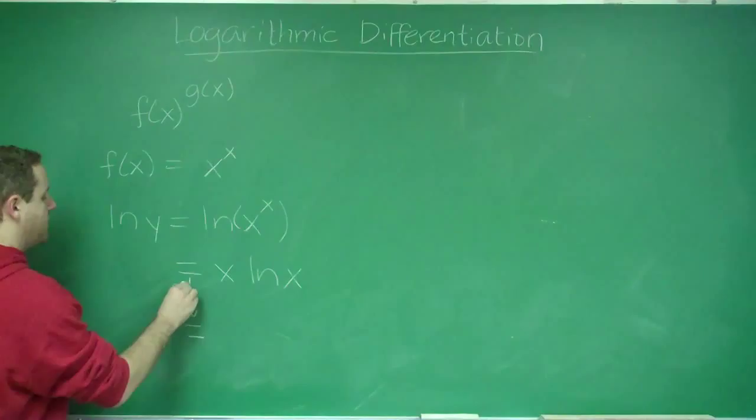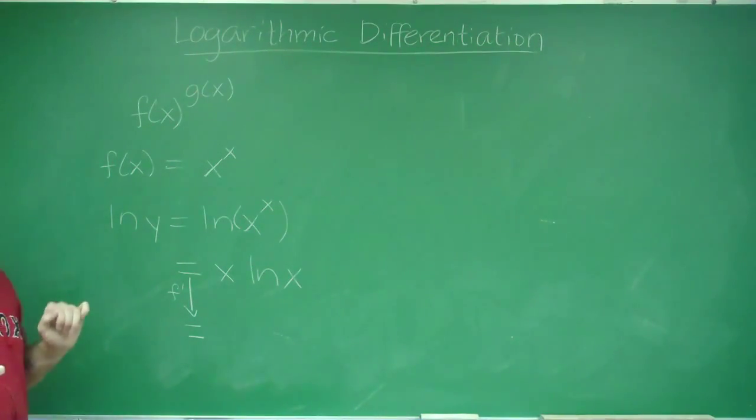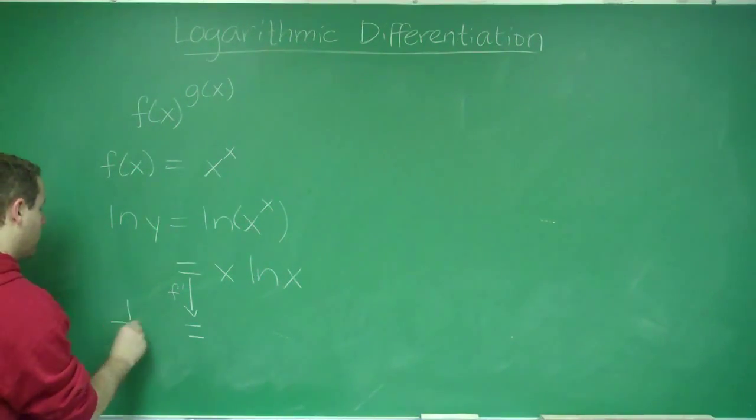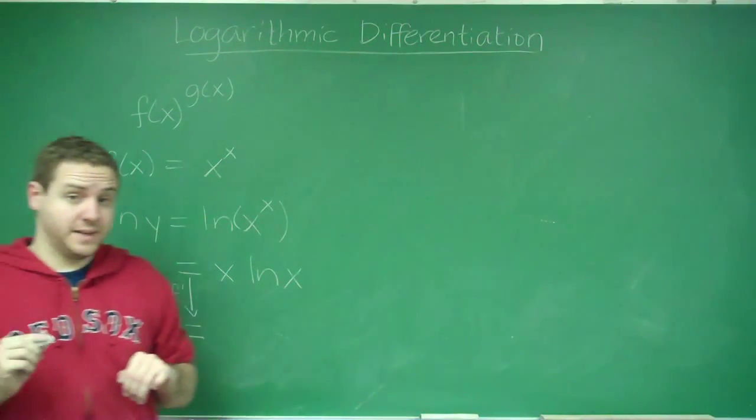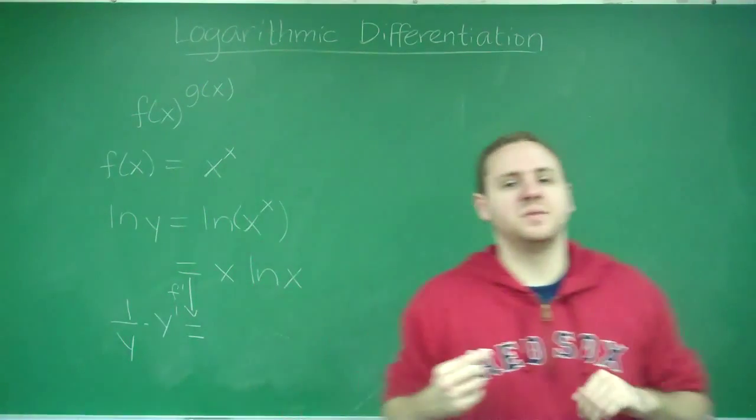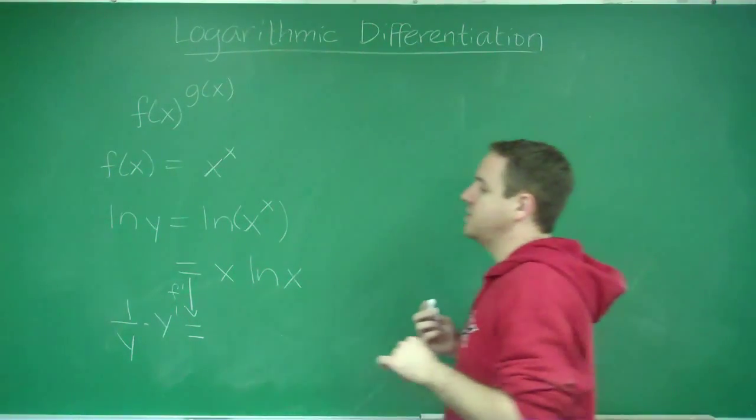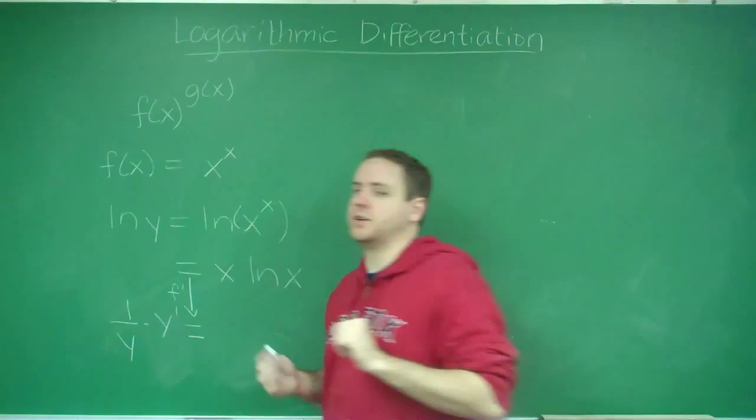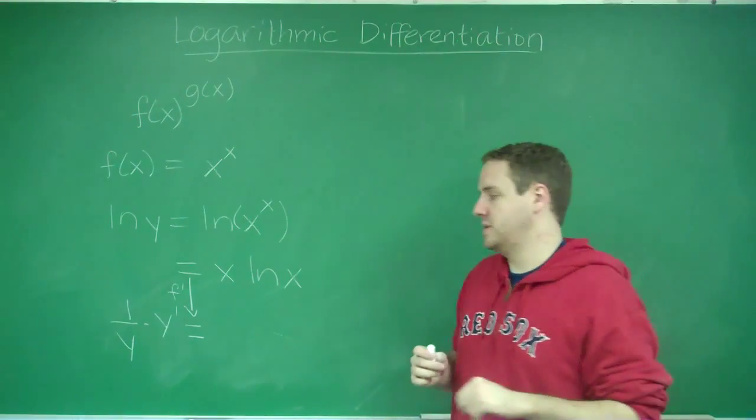In your derivative step, the derivative of ln y would be 1 over y times y prime, or dy/dx. Remember, because of implicit differentiation, every time you take the derivative of a y term, you have to multiply it by y prime, or dy/dx.